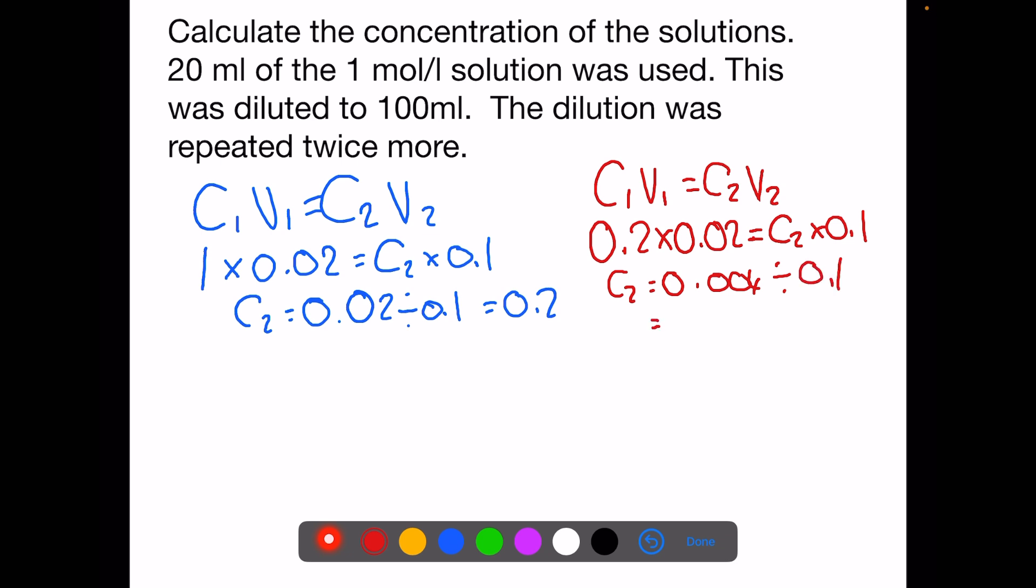This will give a concentration of 0.04 moles per liter. In the final dilution we're doing C1V1 equals C2V2 again. This time C1 is our new concentration 0.04 multiplied by the pipette value 0.02 and we're trying to calculate C2.